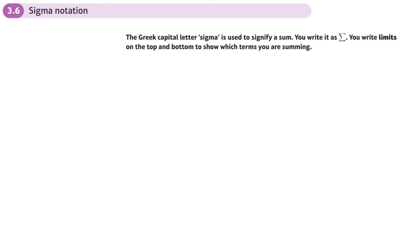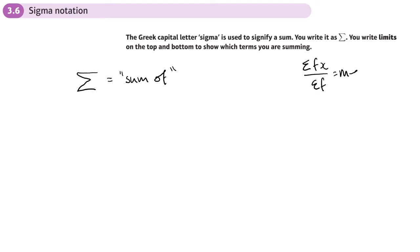This is the sixth section of the sequences and series chapter, and we're looking at sigma notation. You've come across sigma notation before — it's a Greek letter sigma, and we use it to represent the sum of something. You've seen it used for working out the mean. We can also use sigma notation to represent a series.